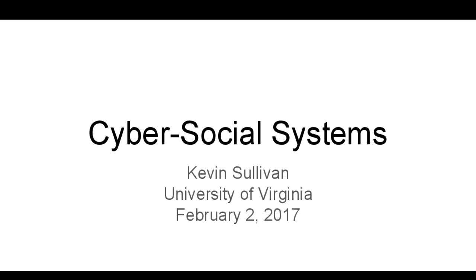He is an associate professor in computer science at the University of Virginia. His PhD in computer science is from the University of Washington, where he worked with David Knottkin on software architecture and evolution. He has worked on issues including modularity and the economic value of flexibility and design, programming language features for aspect-oriented modularity, and formal methods for design space exploration.